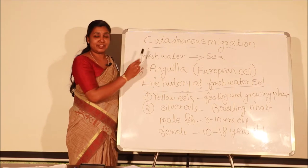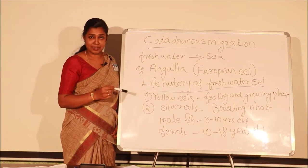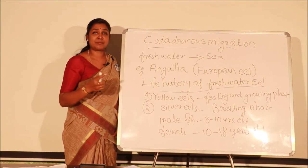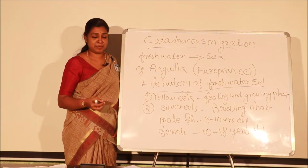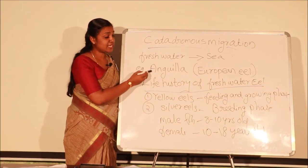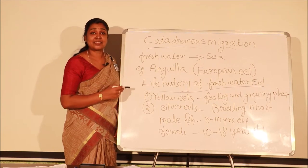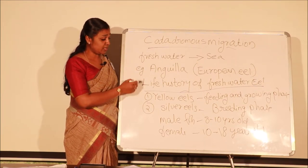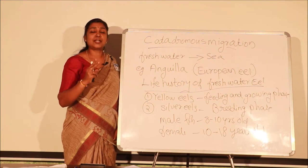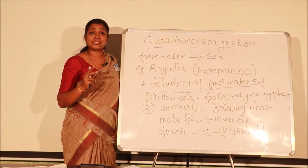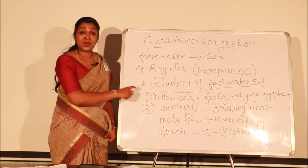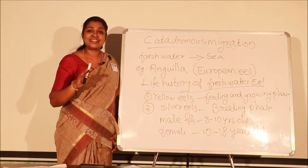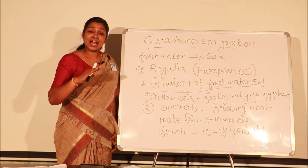Next is catadromous migration. Catadromous migration is just the opposite of anadromous migration — it is from freshwater to sea. The fishes live in freshwater for most of their life and then migrate to the sea for breeding and spawning. The example is Anguilla — the European eel.